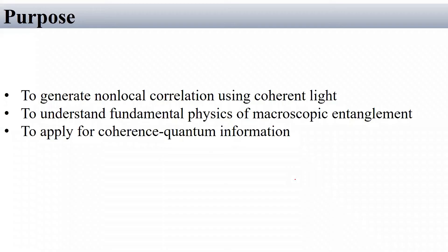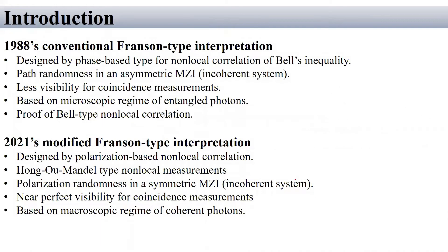We found the non-local correlation by using coherent light. This is for understanding fundamental physics of macroscopic entanglement. Furthermore, it is to apply for coherent quantum information. To summarize briefly, Franson-type experiment is the alternative Bell measurement showing non-local correlation of quantum entanglement. This idea stepped in at 1988 and after that many experimental results are published.